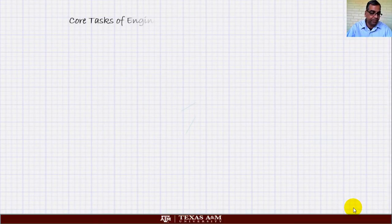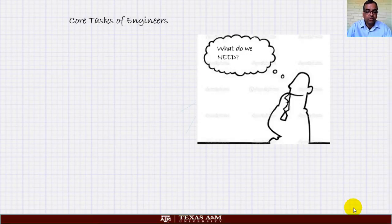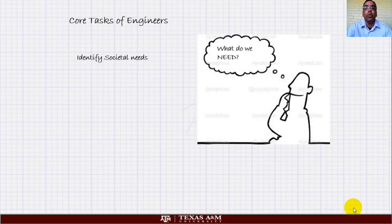So what is a core task? The first thing we start out with is what do we need? This is called a need analysis or a need statement. The first thing that an engineer does is identify societal needs. For example, today one of the challenges that we are facing is availability of clean water. As an engineer you would say, okay, society needs clean water, what are we going to do about it?